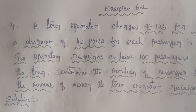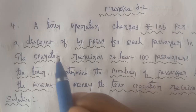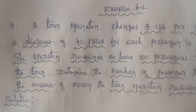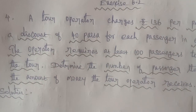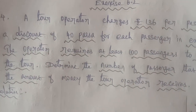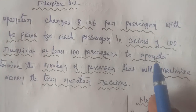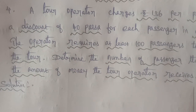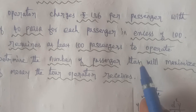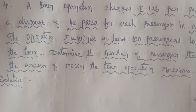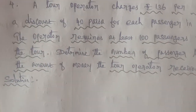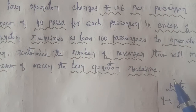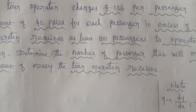Exercise 6.2, Question 4. A tour operator charges Rs. 136 per passenger with a discount of 40 paise for each passenger in excess of 100. The operator requires at least 100 passengers to operate the tour. Determine the number of passengers that will maximize the amount of money the tour operator receives.